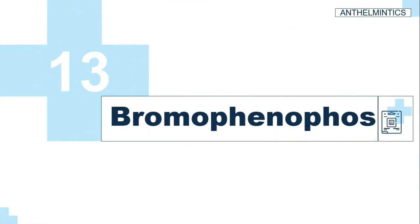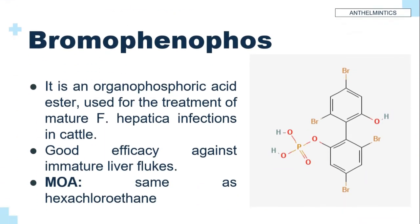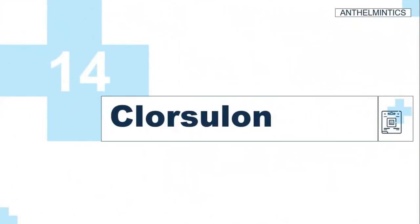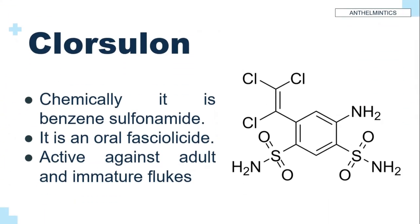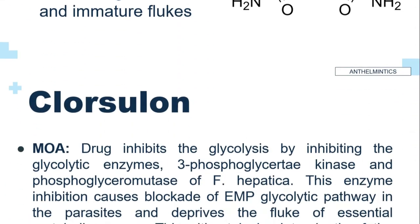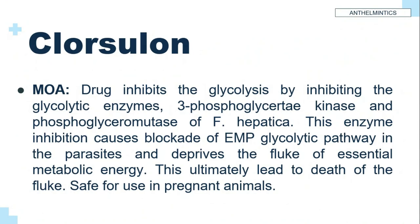Bromophenophos is an organophosphoric acid ester used for treatment of mature Fasciola hepatica infections in cattle. It has good efficacy against immature liver flukes. Clorsulon is chemically a benzene sulfonamide. It is an oral fasciolicide active against adult and immature flukes. Its mechanism of action: the drug inhibits glycolysis by inhibiting the glycolytic enzymes 3-phosphoglycerate kinase and phosphoglyceromutase of Fasciola hepatica.